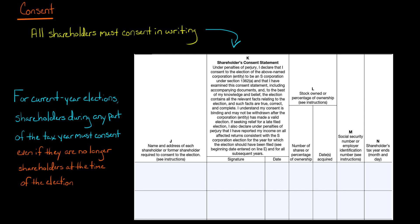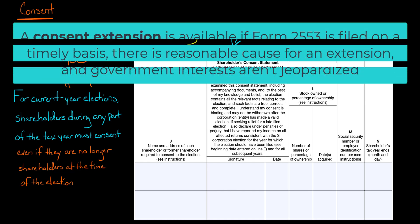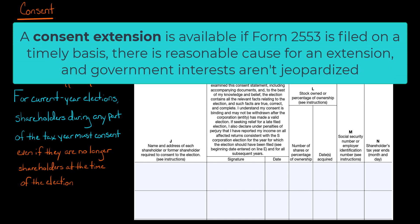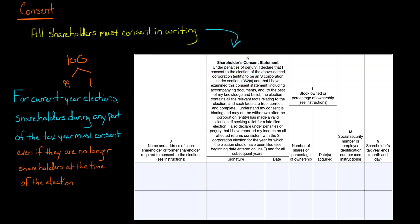Let's say you have 100 shareholders and 99 of them say they want an S-Corp, but one says no, or you can't get a hold of them — they're trekking in Nepal or whatever — and then you finally reach them and they say no. It doesn't matter. It's not a majority vote; it's all shareholders who have to consent.